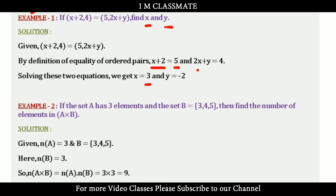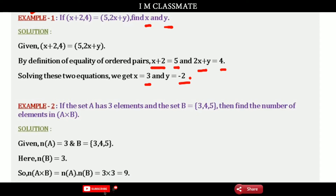Similarly, 2x + y = 4. Substituting x = 3: 2 × 3 = 6, so y = 4 − 6 = −2. Is it clear? Ok.